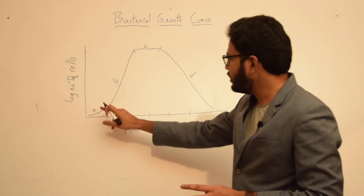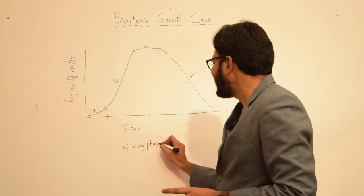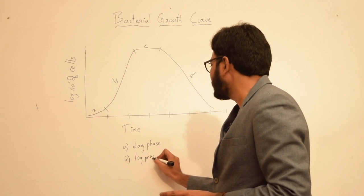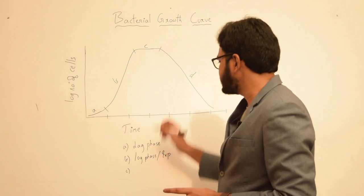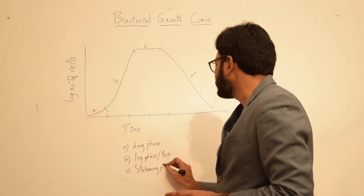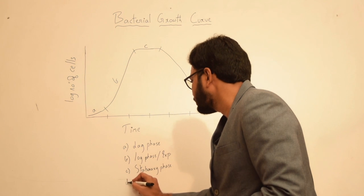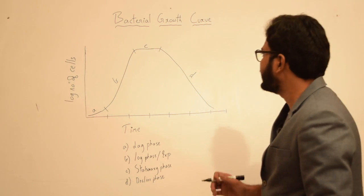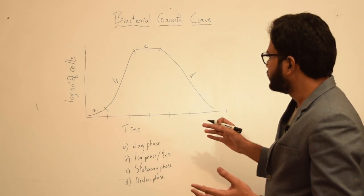With increase in time, certain chain of events happen within the bacterial population. A represents lag phase, B represents log phase also called exponential phase, C represents stationary phase or plateau, and D represents decline or death phase. These are the phases encountered in a bacterial growth curve when observing bacteria in a closed system.